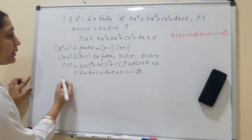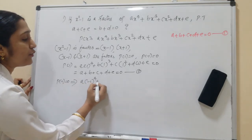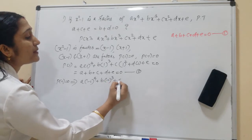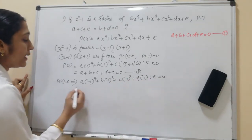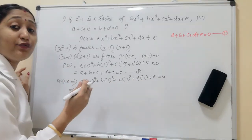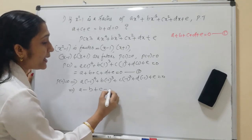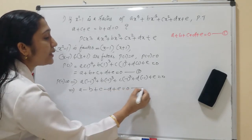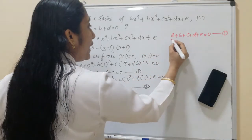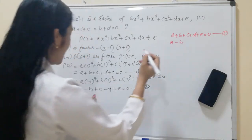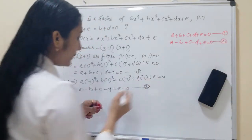Next, we find p(-1) = 0. So a(-1)⁴ + b(-1)³ + c(-1)² + d(-1) + e = 0. Since (-1)⁴ = 1, (-1)³ = -1, (-1)² = 1, this becomes a - b + c - d + e = 0, which is Equation 2.